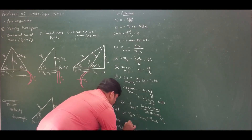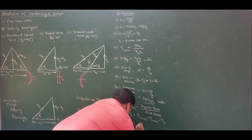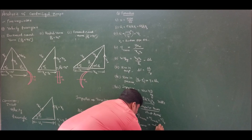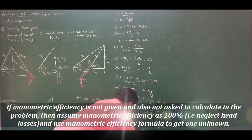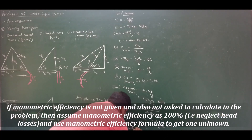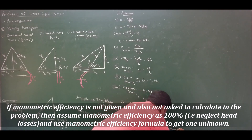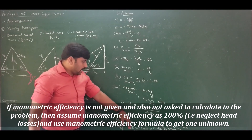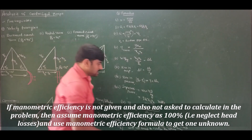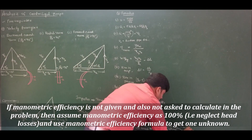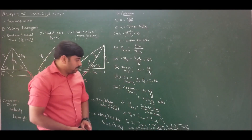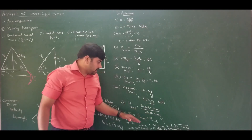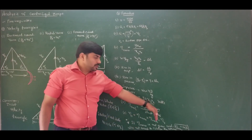A very important note: if manometric efficiency is not given and also not asked to be calculated, then assume manometric efficiency as 100%. This means we are neglecting head losses. Keep this in mind whenever you solve problems on centrifugal pumps.